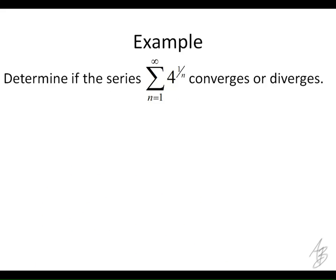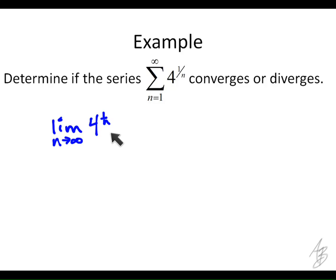Here's another example. Let's see if the series — the sum of 4 to the 1 over n — converges or diverges. Using the nth term test, we want to evaluate the limit of 4 to the 1 over n as n approaches infinity. Before evaluating, consider what the results could be: if the limit is 0, we don't know anything new; if the limit is not 0, the series diverges. So if this limit doesn't exist or is any number besides 0, the series diverges. As n approaches infinity, the exponent 1 over n goes to 0.